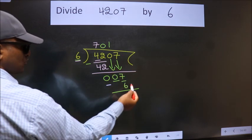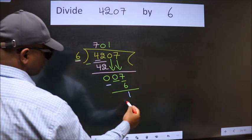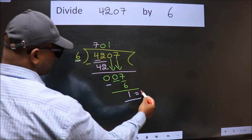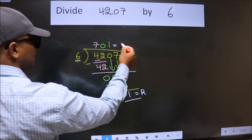No more numbers to bring it down. So, we stop here. This is our remainder. This is our quotient.